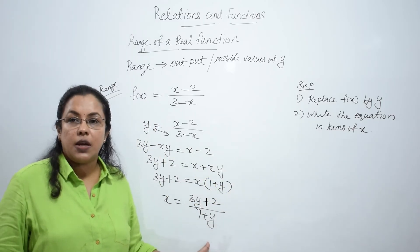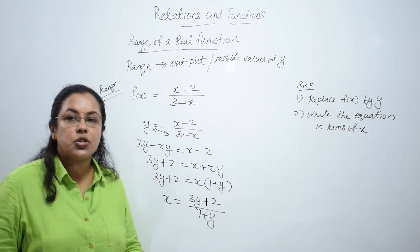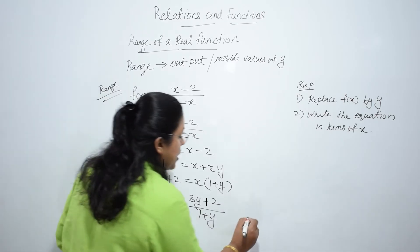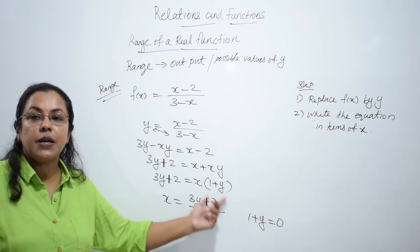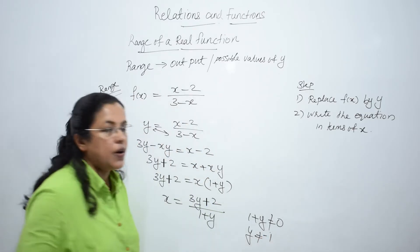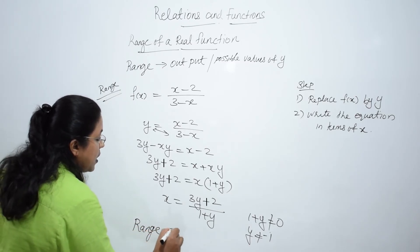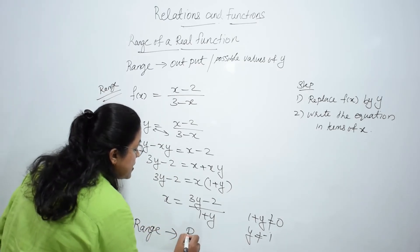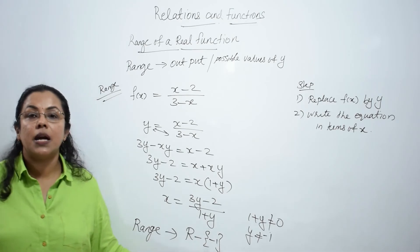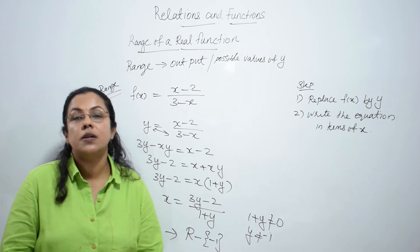Write the equation in terms of x: x = something. Now look at the equation carefully. What happens if y = -1, or 1 + y = 0? This becomes infinity. So 1 + y cannot be equal to 0, meaning y cannot be equal to -1. That gives the range of the equation. Range means all the values except -1. So we can write range as ℝ minus {-1}, which gives the range of the function.